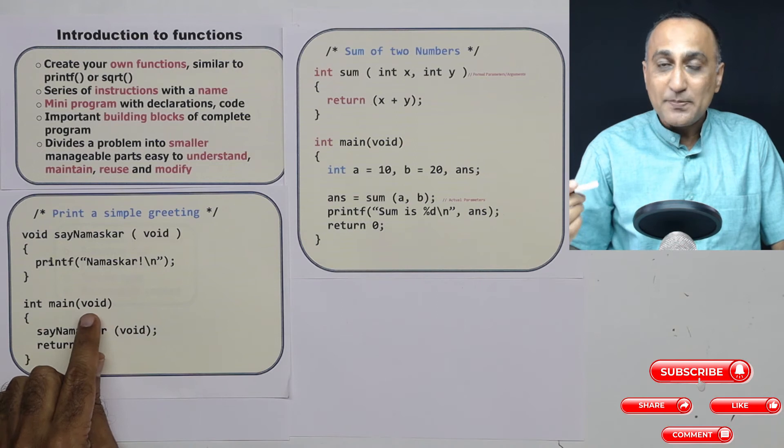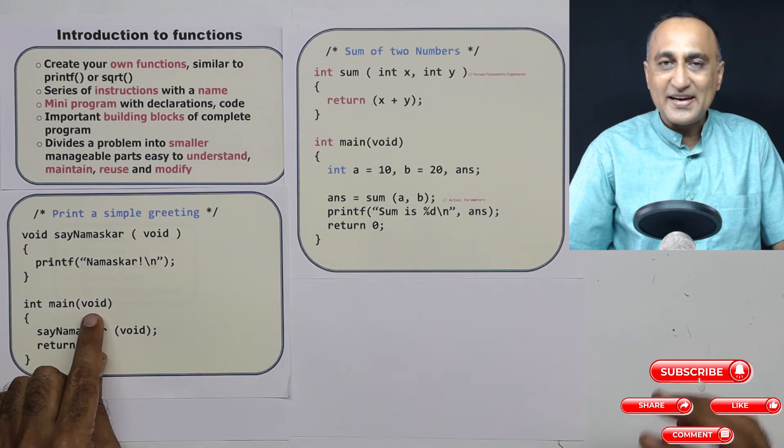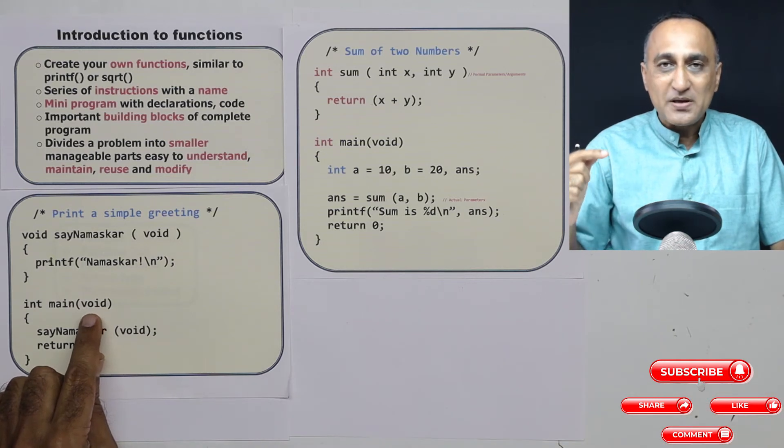You can also send parameters or values to main, but I choose not to send. That's why this void indicates no values are being sent to main by the user.